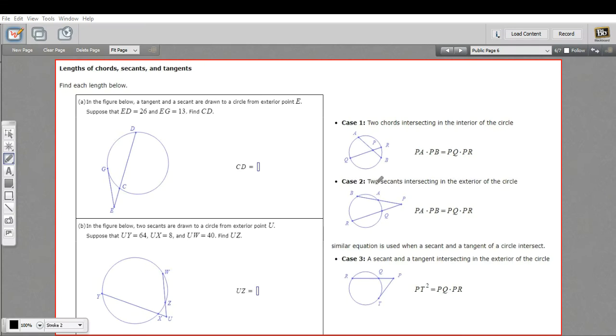In these problems, we have intersecting secants or tangent lines or chords in a circle, and we're trying to find segment lengths. There are three specific cases or situations and some formulas that apply to each of those.